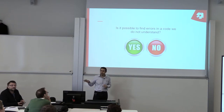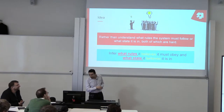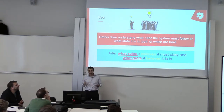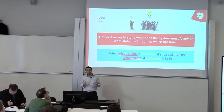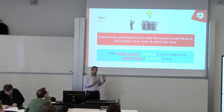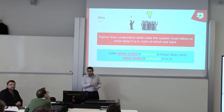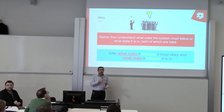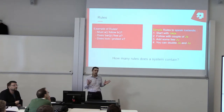This is the main idea of today's project. Since you all agree on one thing — you're right, and the one who is the anomaly is the wrong person. The main idea is: rather than understanding what rules the system must follow or what state the system is in, which we showed is difficult, we want to infer the rules that the system believes it must obey, and the state it believes it's in.